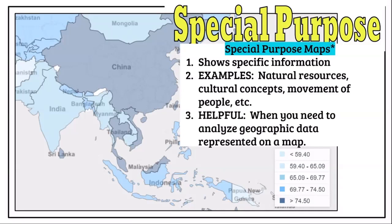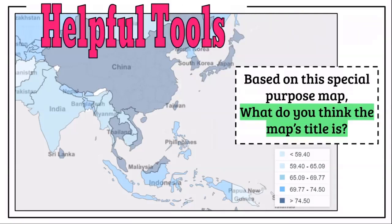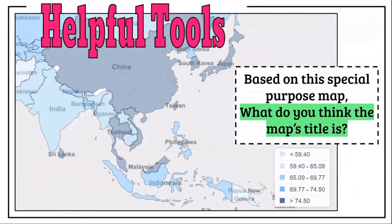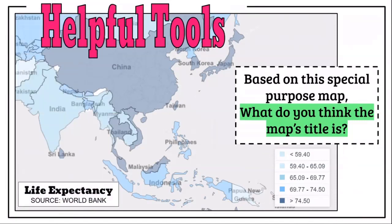If you have a special purpose map, it's really important that you have specific tools on it, because without those tools you won't know how to read it. Looking at this special purpose map — what is the title? There's no title here. I see it's Asia, and there's a key with numbers, but I don't know if those numbers mean average temperature, literacy rates — actually they represent life expectancy. It's important to look at how special purpose maps were created so you know they're from trusted sources.